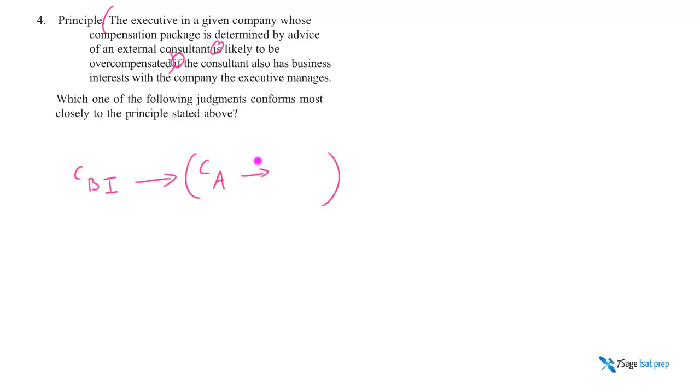What's this whole thing? Well, the CEO, their pay is determined by the advice of the consultant. So here, maybe I'll just write consultant advice to determine pay. If that's the case, then this is where this arrow, this conditional arrow, is where I say it's subtly represented by this 'is'. Is likely to be overcompensated. Likely to be overcompensated.